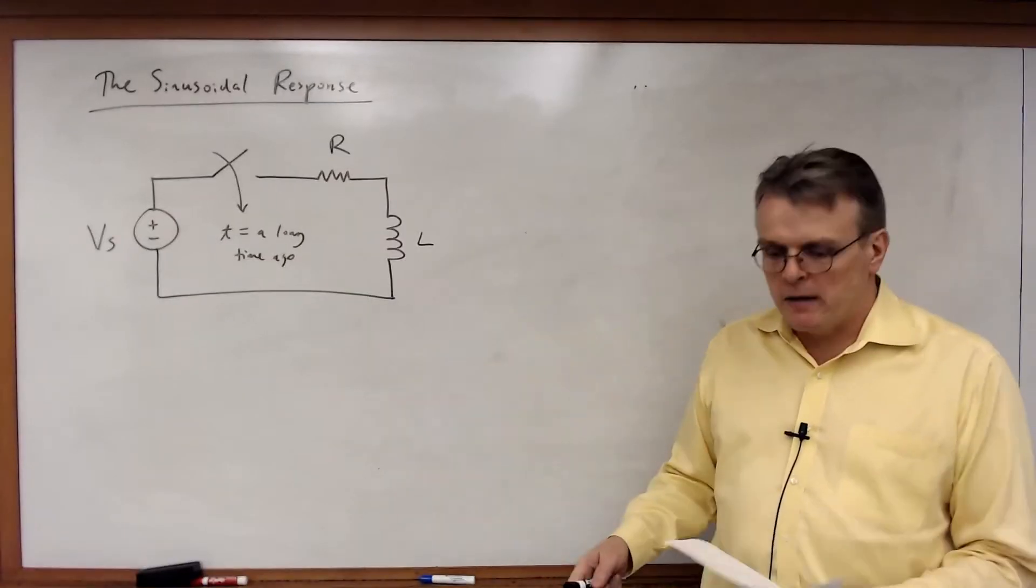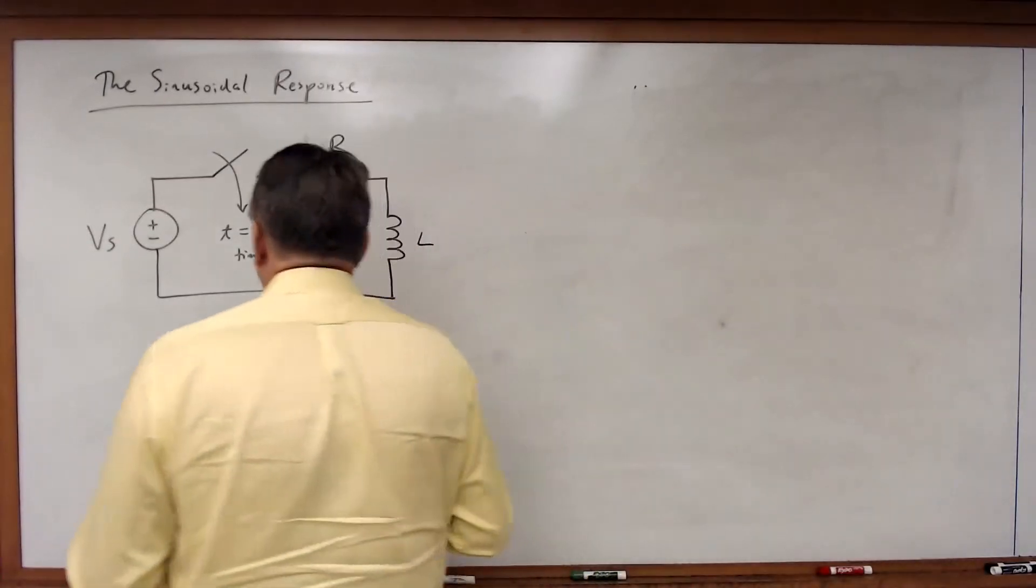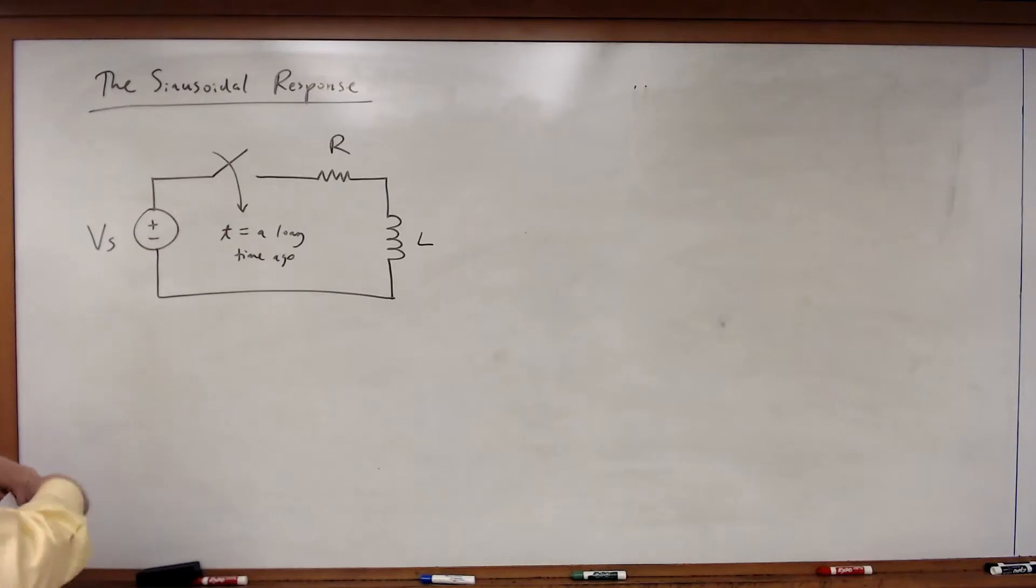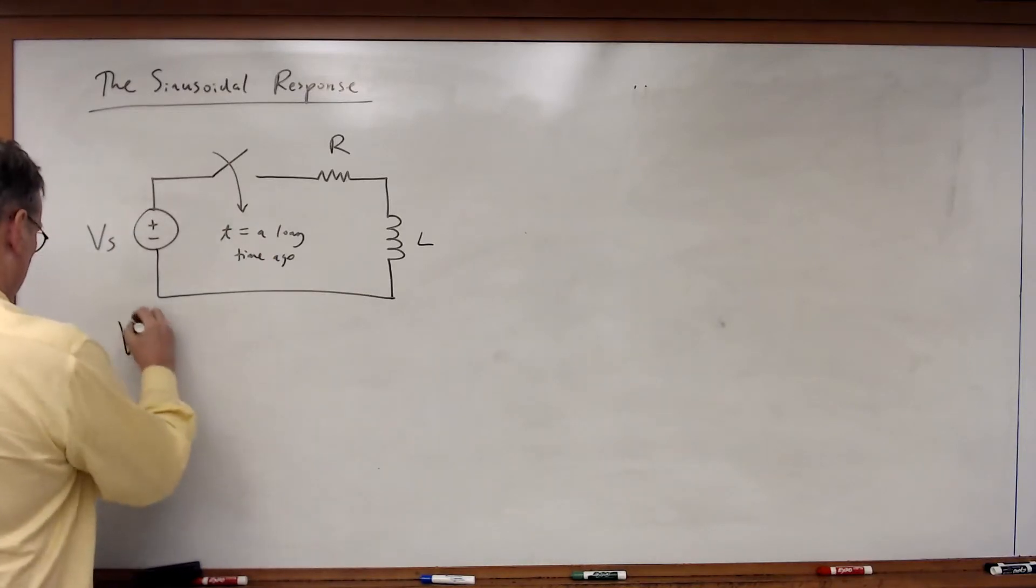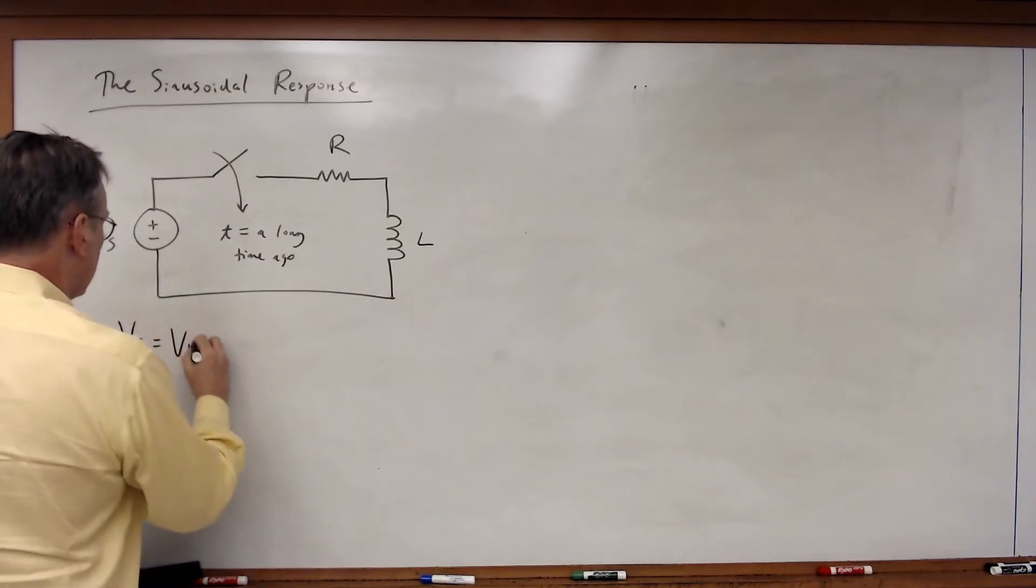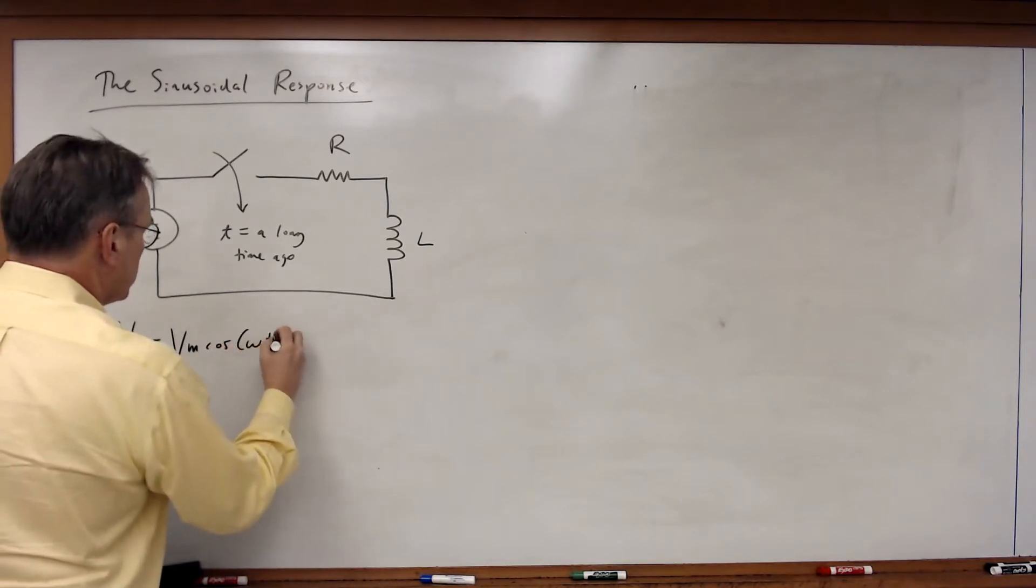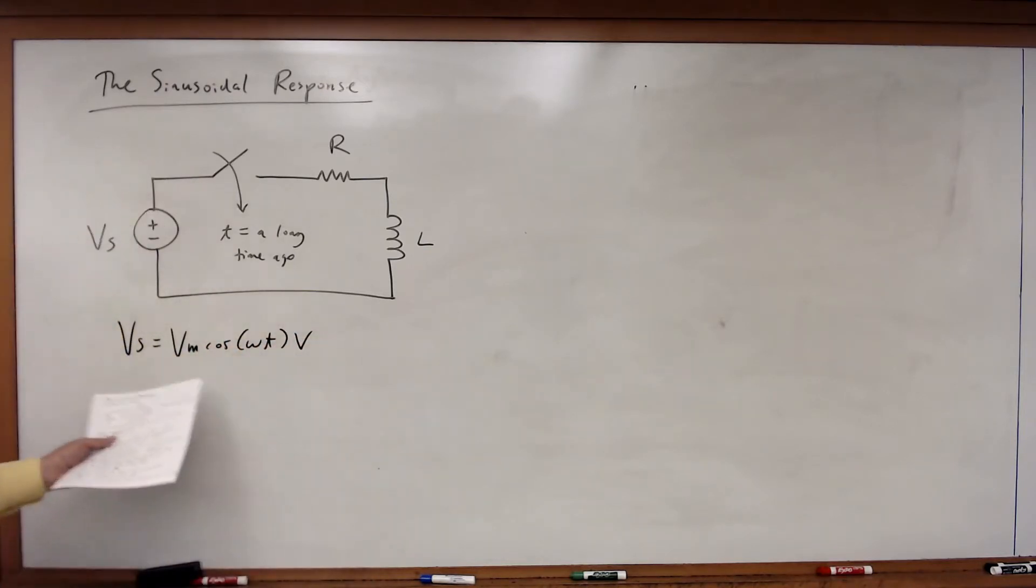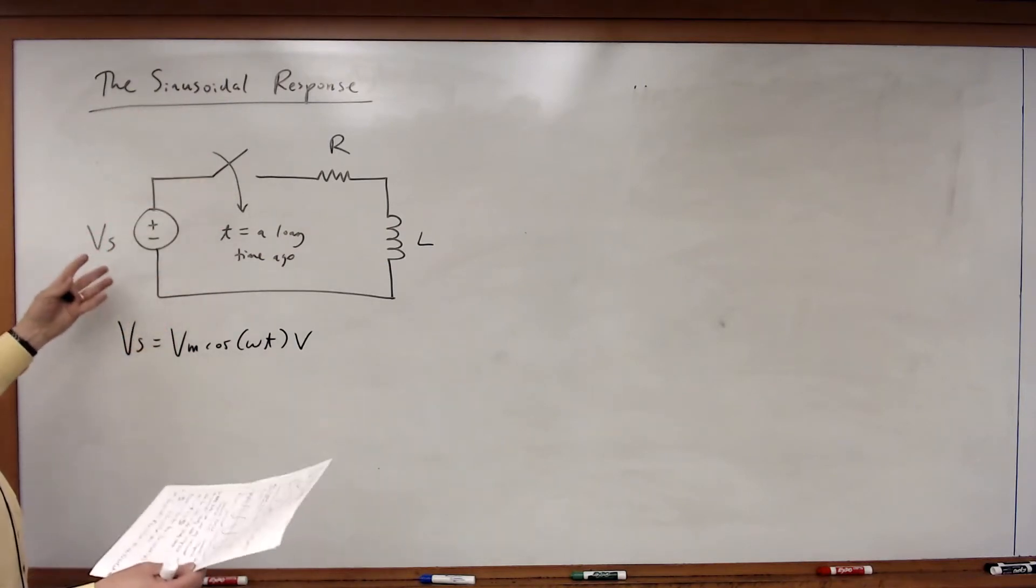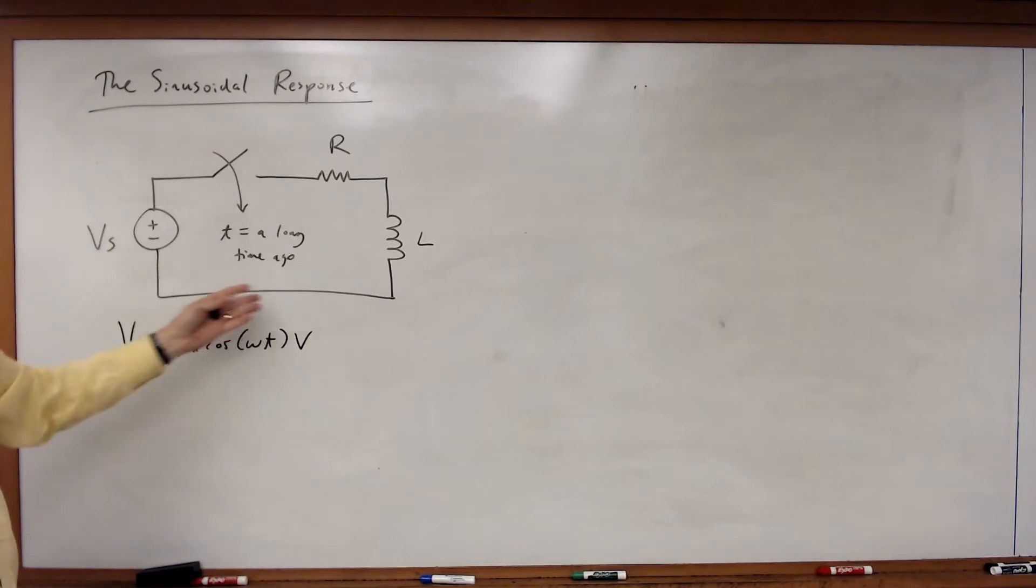So what we have here is a circuit where I've got a voltage that's sinusoidal, Vs equals Vm times cosine omega T volts. So I've got a sinusoid, and I built a circuit with a resistor and an inductor, and a long time ago I closed the switch, turned this thing on so that current could flow around this loop.